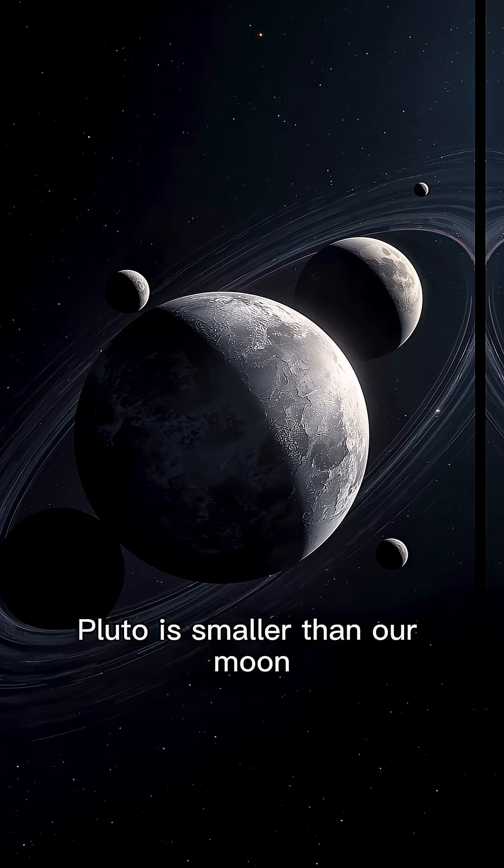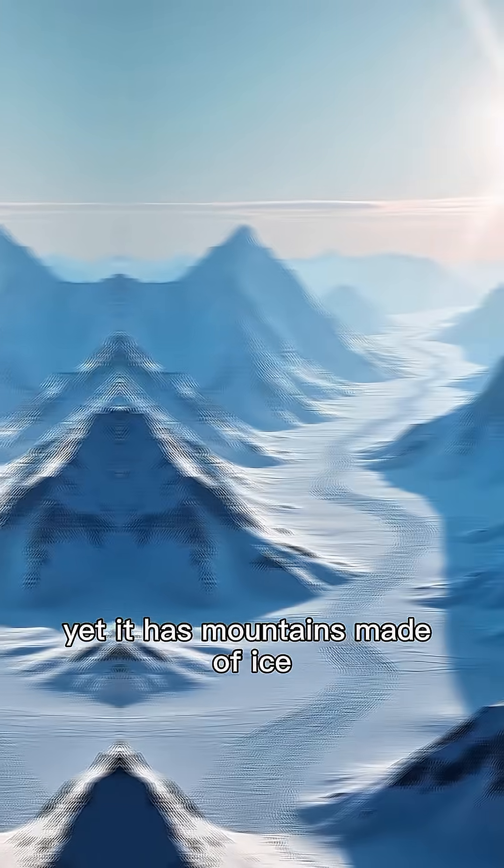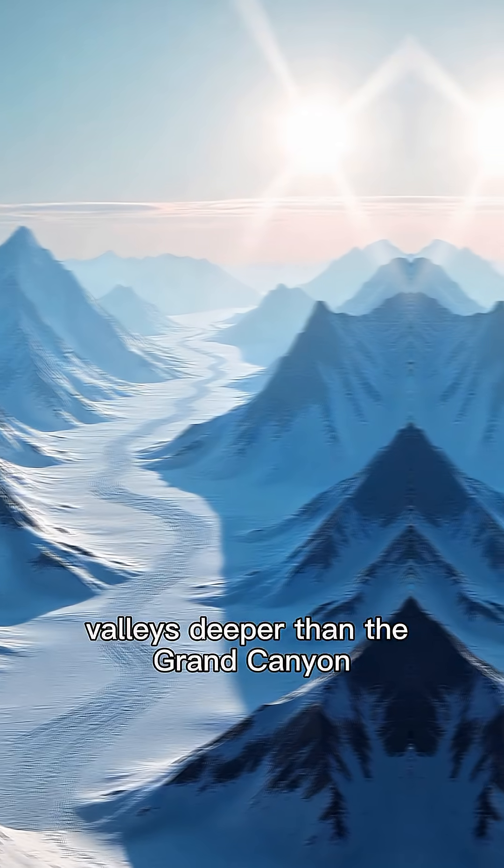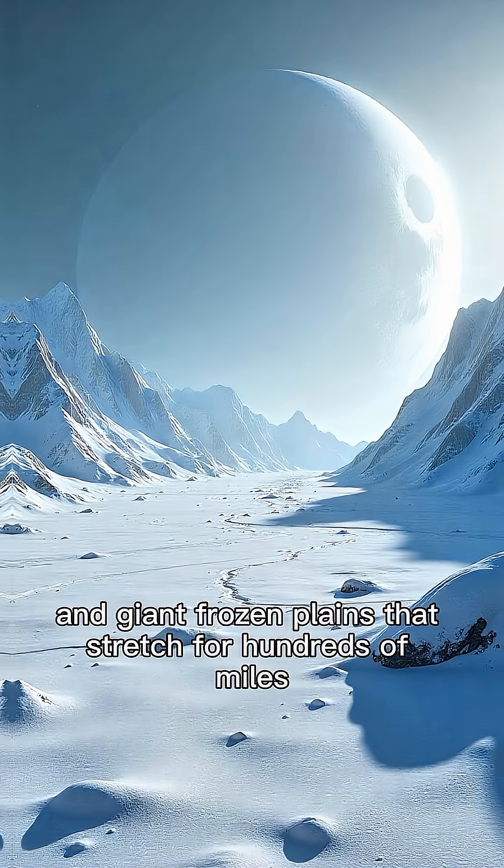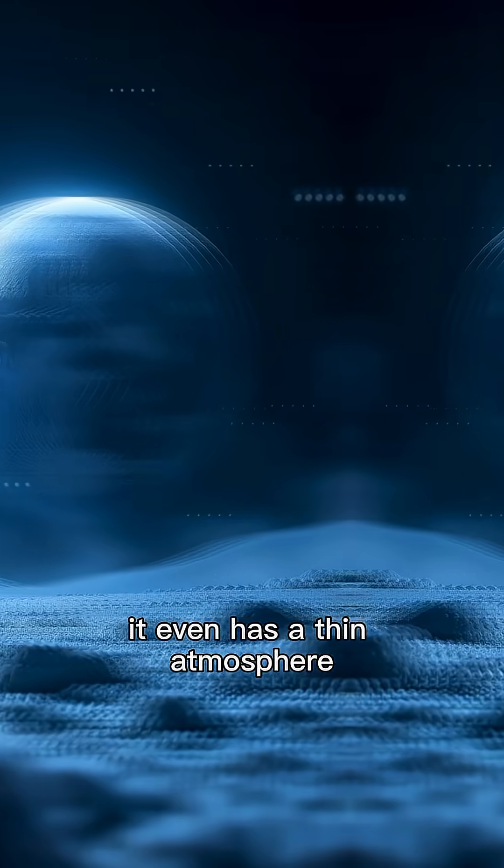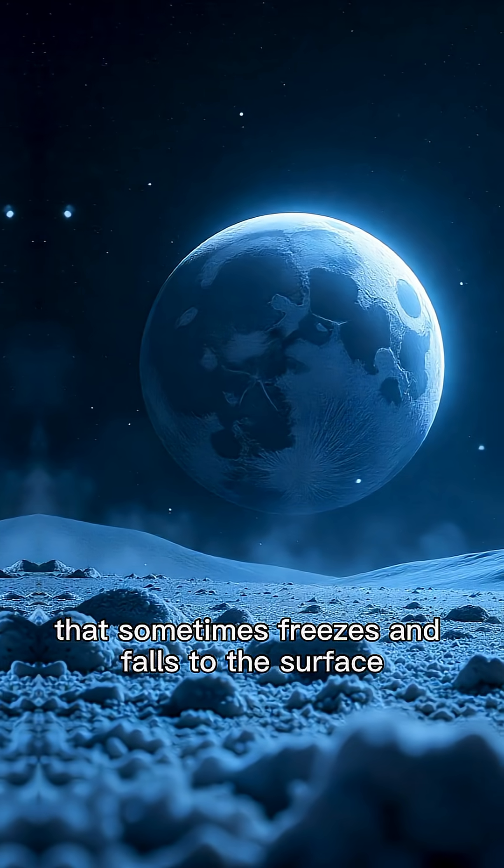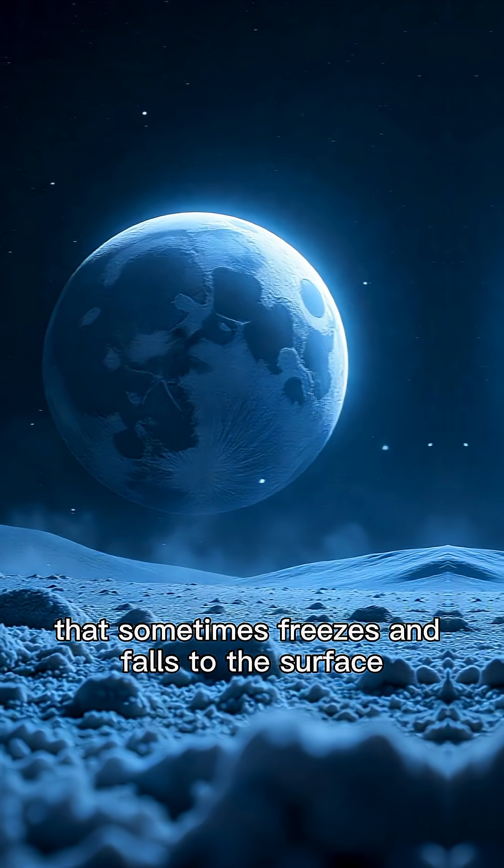Pluto is smaller than our moon, yet it has mountains made of ice, valleys deeper than the Grand Canyon, and giant frozen plains that stretch for hundreds of miles. It even has a thin atmosphere that sometimes freezes and falls to the surface like snow.